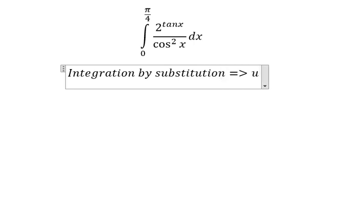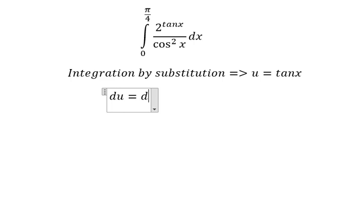So we have u equals tan x and du equals dx over cos²x. Now we need to change the bounds 0 and π/4.